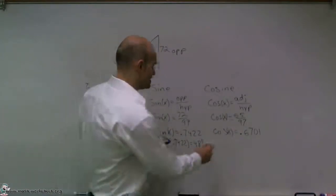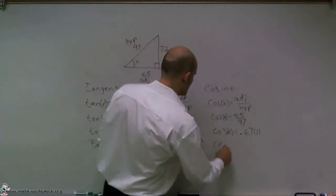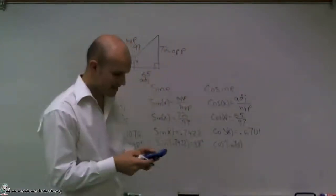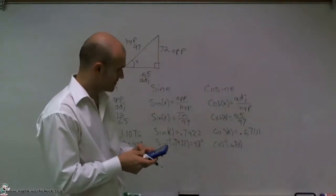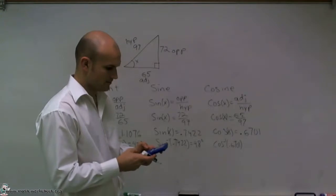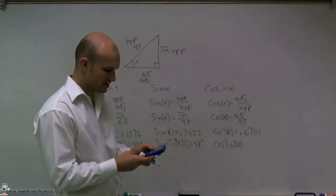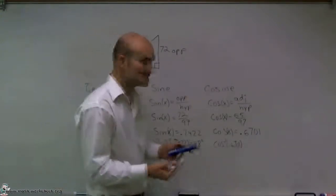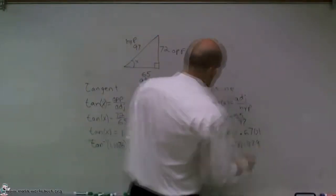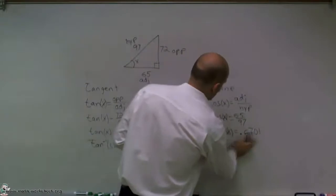Lastly, I'll do inverse cosine of 0.6701. I have 65 divided by 97, and then inverse cosine of that full answer is going to give me, again, 47.9, which rounds to 48 degrees.